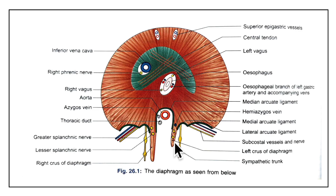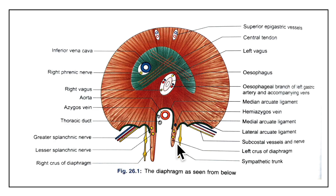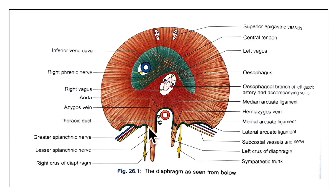Now let's look at the small openings in the diaphragm. Each crus of the diaphragm is pierced by the greater and lesser splanchnic nerves. The left crus is pierced in addition by the hemi-azygos vein. The sympathetic chain passes from the thorax to the abdomen behind the medial arcuate ligament or medial lumbocostal arch.